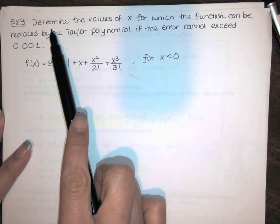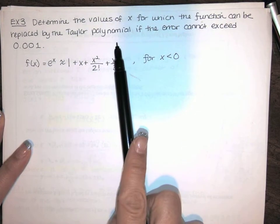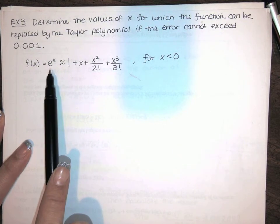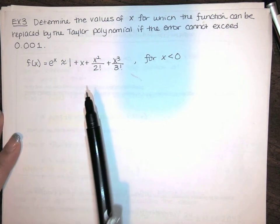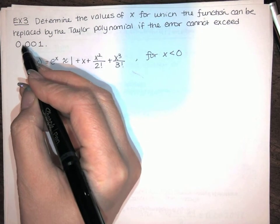Then we're asked to determine the values of x for which the function can be replaced by the Taylor polynomial if the error in using this polynomial to approximate this function cannot exceed 0.001.